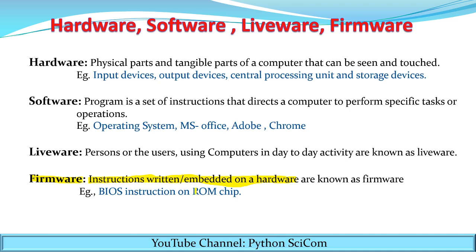For example, ROM. It is a type of primary memory. ROM is a read-only memory — you cannot change the data, you can just read it. Now some instructions are embedded on this ROM, so the instructions are embedded on hardware. Hence ROM is an example of firmware. Specifically, BIOS instructions on the ROM chip are an example of firmware.